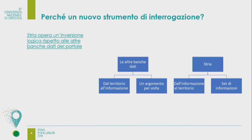STRIA opera un'inversione logica rispetto alle banche dati del portale. Mentre nelle altre banche dati si seleziona un territorio e poi si scelgono le informazioni statistiche - un argomento per volta, popolazione, ambiente, mobilità - STRIA invece parte dall'informazione al territorio: si selezionano le informazioni e poi si cerca il territorio più adatto ad avere un certo livello di certi fenomeni. Inoltre la banca dati STRIA è pluri-argomento.